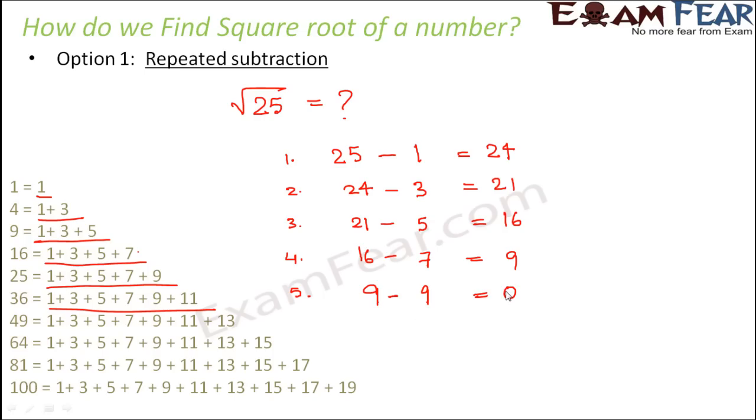So what happens is it doesn't matter whichever the number is for which you want to find out the square root. If that is a perfect square, only then you will get a whole number for the square root. So you will be able to find out the square root only for the perfect squares. So if it is a perfect square, then as you keep subtracting an odd number from that number you finally would get 0.